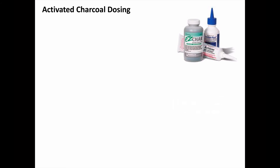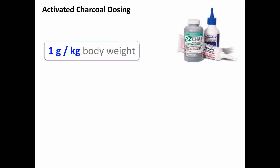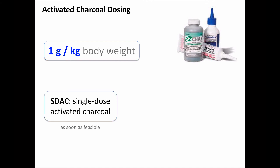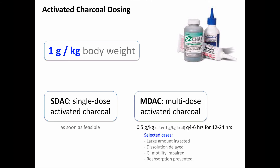Although a 10 to 1 ratio of charcoal to ingested drug is often recommended, it would be rare that you'd know the ingested dose. The empirical recommended dose is one gram per kilogram of patient body weight. Charcoal can be given as a single dose — SDAC — and you'd like to give it as soon as feasible; the longer you wait, the less effective it will be. Multi-dose activated charcoal, MDAC, is also sometimes given. The initial loading dose is the same one gram per kilogram, which is then followed by 0.5 grams per kilogram every four to six hours.